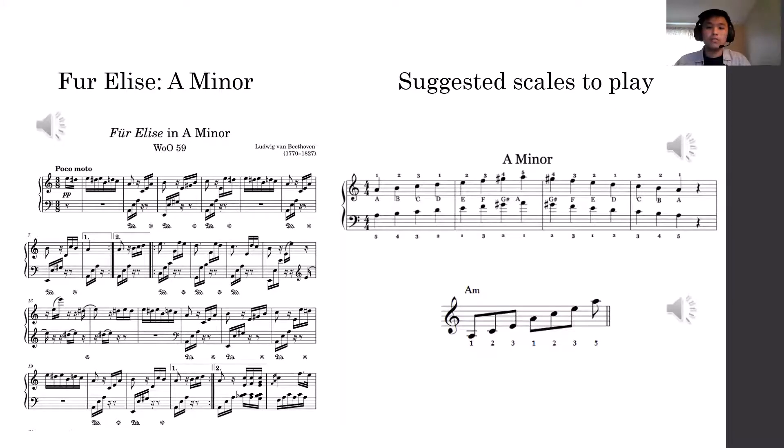For example, if you want to practice Fur Elise by Beethoven, the app would suggest you play an A minor scale and an A minor arpeggio.